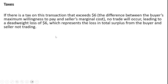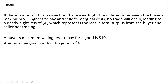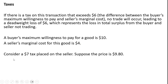Now let's take into account taxes. If there is a tax on this transaction that exceeds $6 — the difference between the buyer's maximum willingness to pay and the seller's marginal cost — no trade will occur, leading to a deadweight loss of $6. The buyer's maximum willingness to pay is $10, the seller's marginal cost is $4, and the $10 minus $4 is where the $6 comes from. Any tax that exceeds $6 means there will be no trade, and thus a deadweight loss.